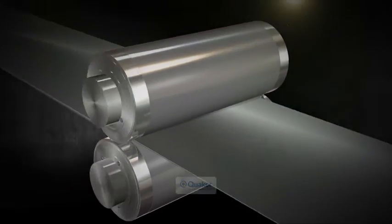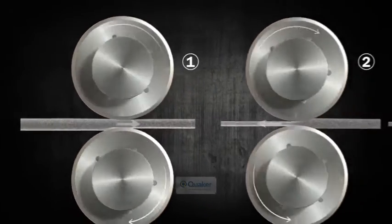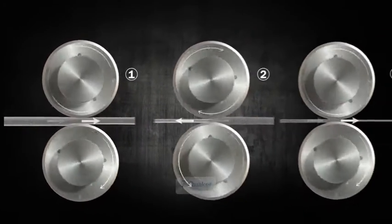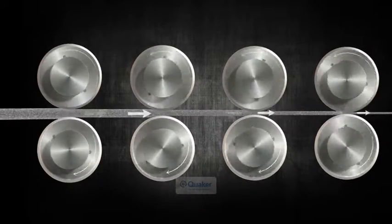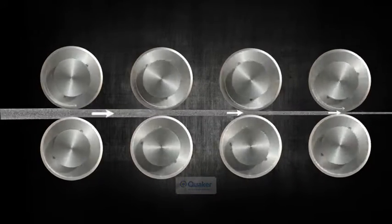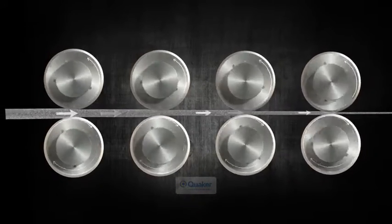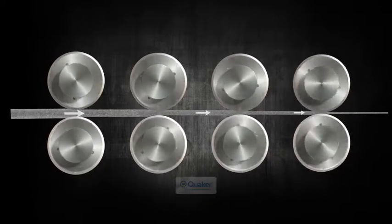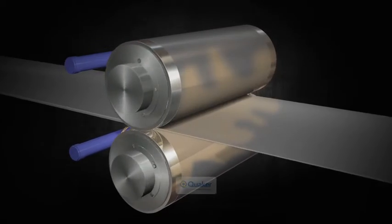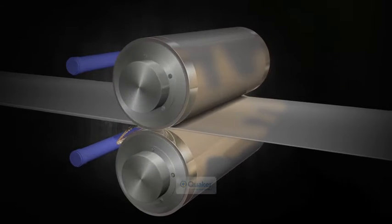Under high loads, the strip thickness is progressively reduced either in several passes in a reversing mill or in several successive stands in a tandem mill. The strip temperature varies from room temperature to 160 degrees Celsius or 320 degrees Fahrenheit.